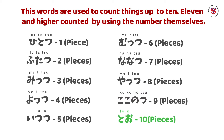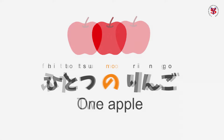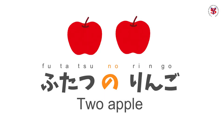Si to — it's the only one without a tsu. After we say hitotsu, futatsu, mittsu, and so on, we add the particle no. So basically, it's going to be hitotsu no ringo, futatsu no ringo, and so on and so forth.